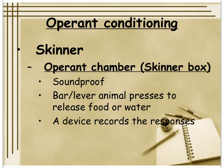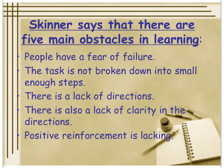According to Skinner, there are five main obstacles to learning: people have a fear of failure; if the task is not broken down into small enough steps, you don't know what you're doing; a lack of directions is a problem; a lack of clarity in directions is a problem; and positive reinforcement is lacking. And here are Skinner's suggestions: give the learner immediate feedback — which is hard because you often wait a long time for feedback. Break down the task into small steps. Repeat directions as many times as necessary. Work from most simple to most complex. Give positive reinforcement.